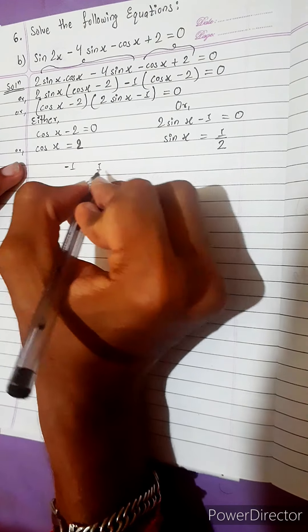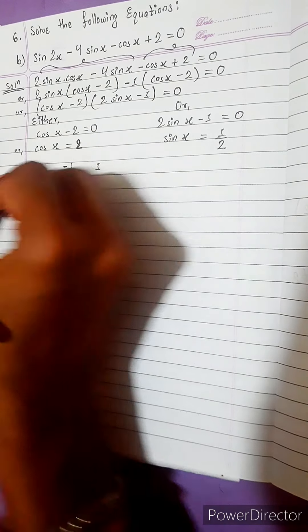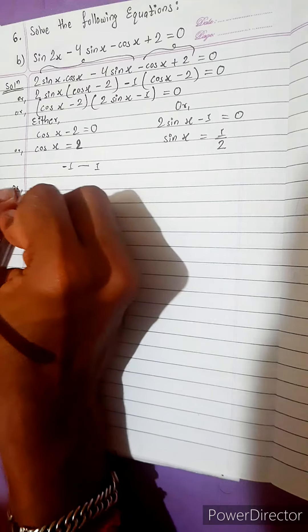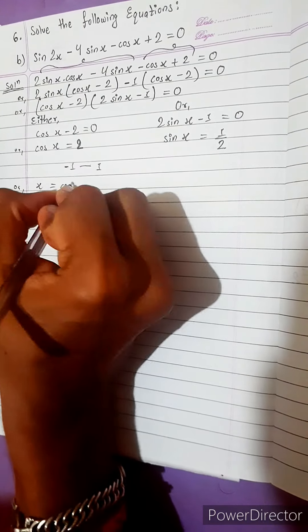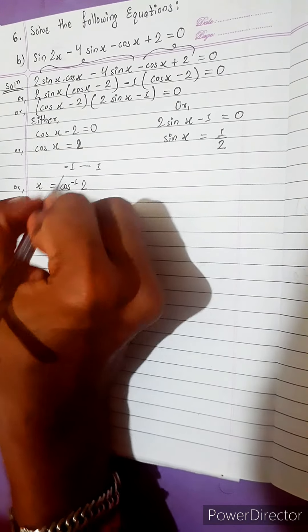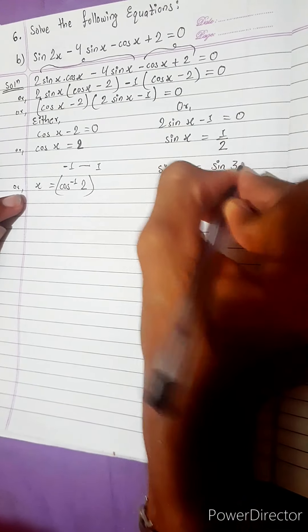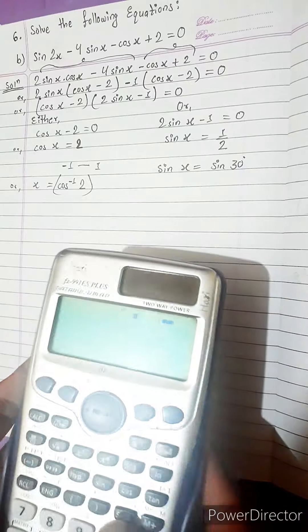Cos value, there is 2 also. I don't think, because cos value ranges from minus 1 to 1. But how to? Okay, we can do one thing. x equals to cos inverse 2. We can do this. Here we got the value of x. Similarly here also.